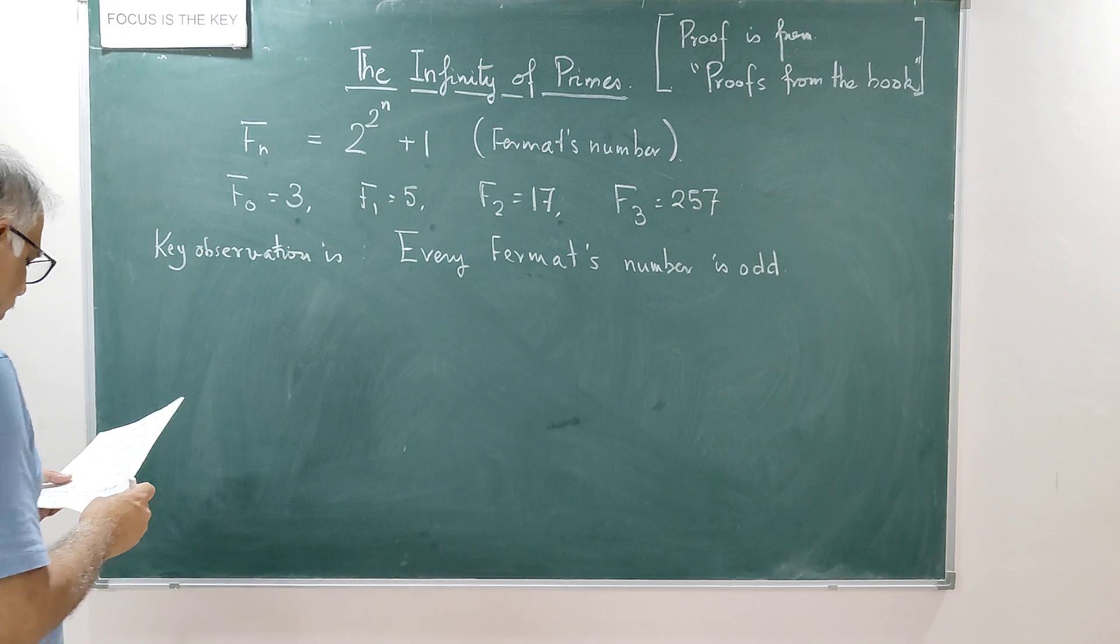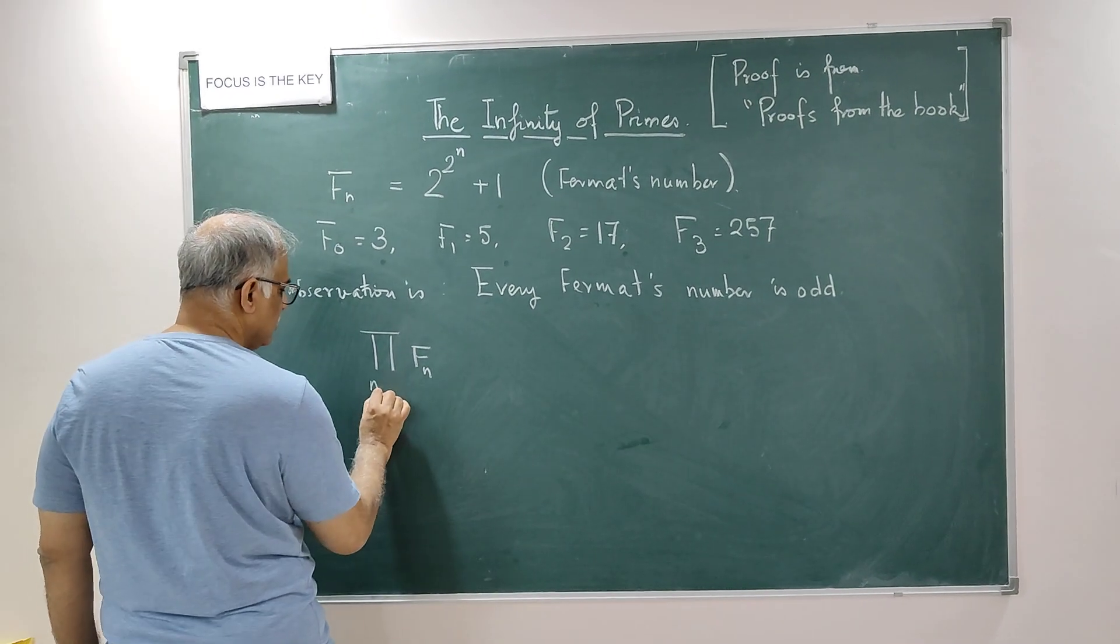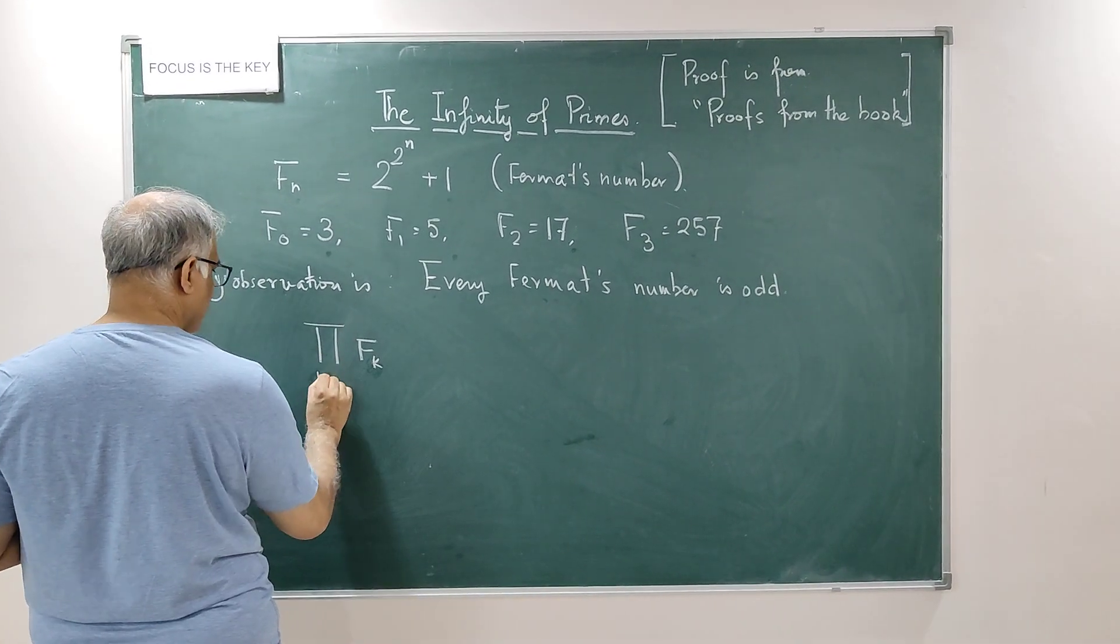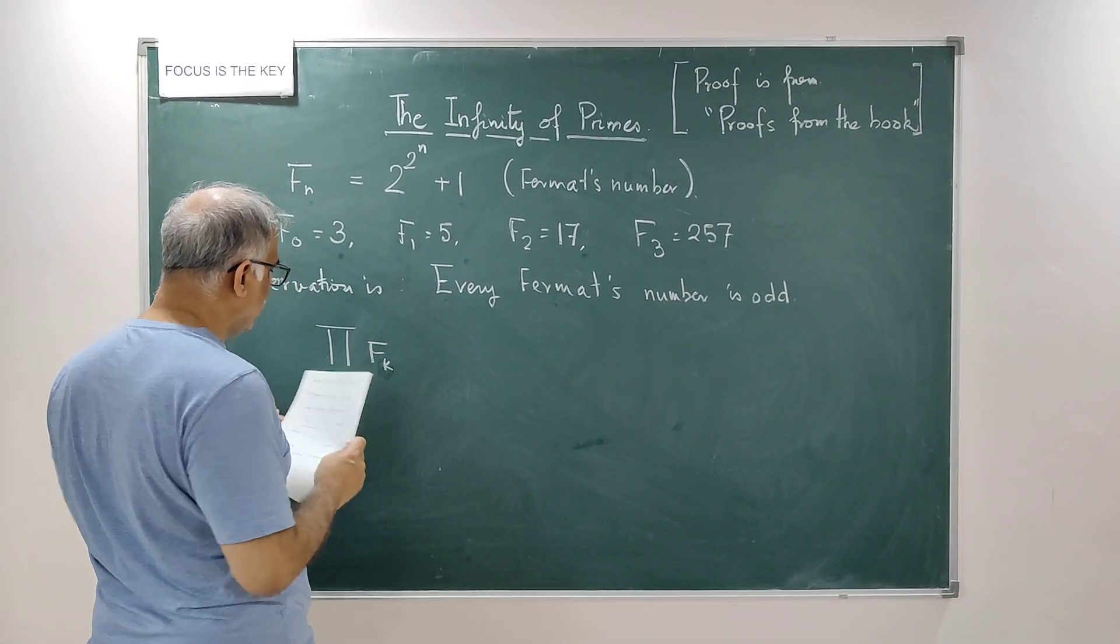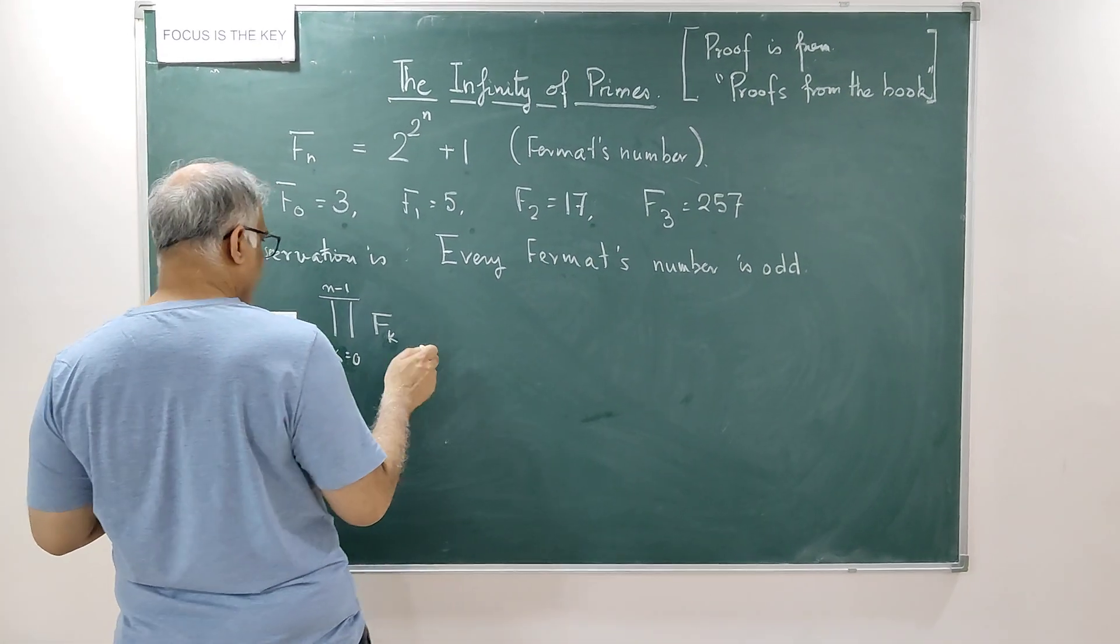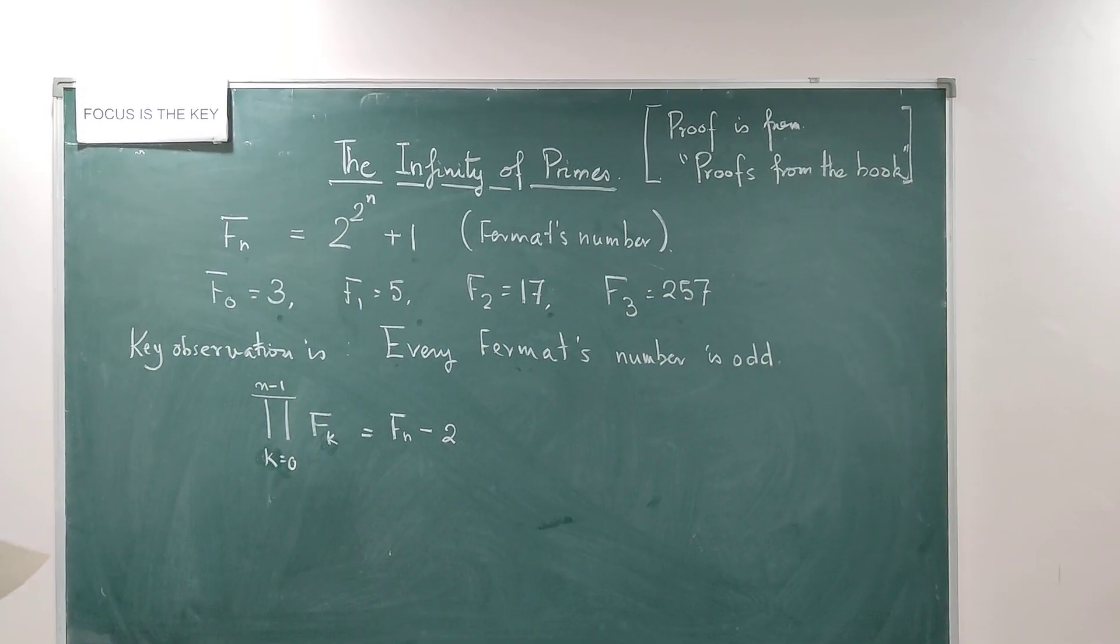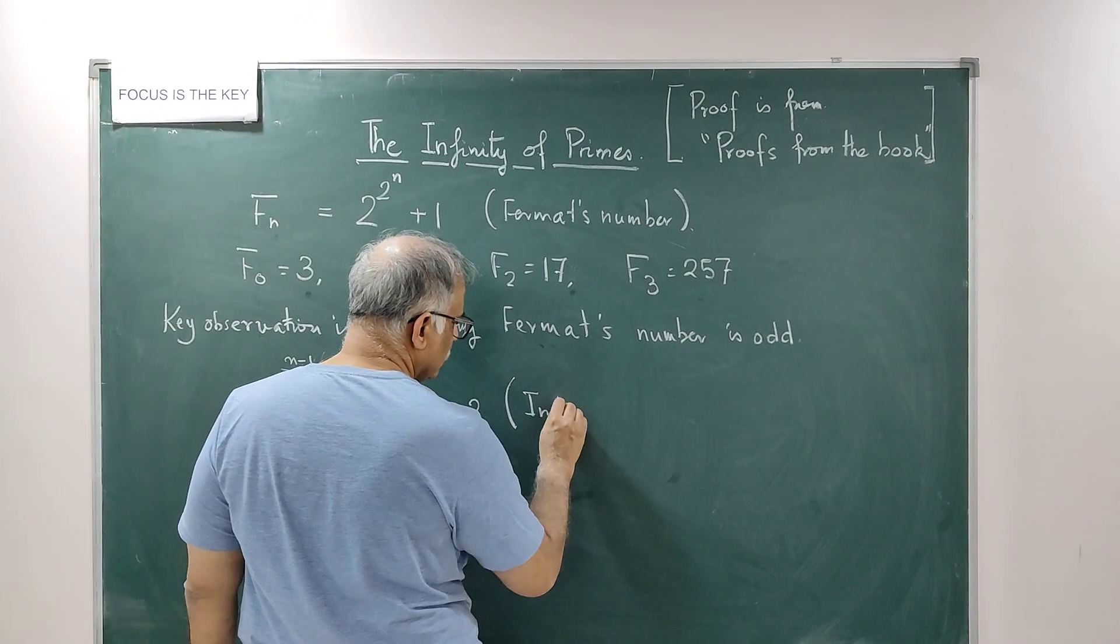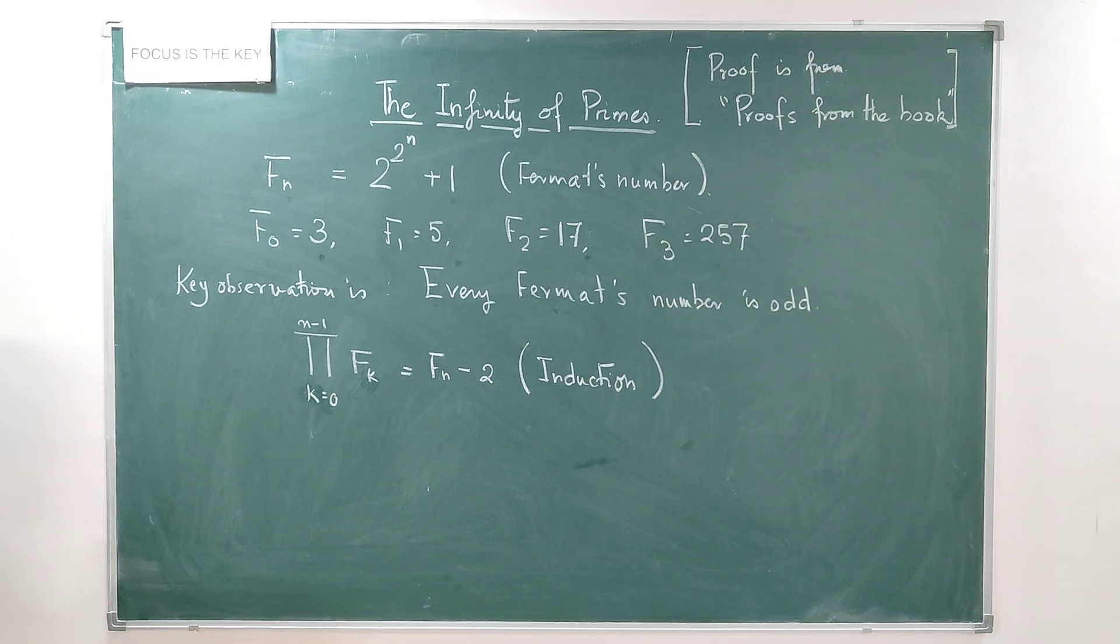All of the thing that one has to observe is that if I take the product of the first n Fermat's numbers, k equal to 0 to n minus 1, so it starts from 0 to n minus 1, the first n Fermat's numbers from F_0 to F_(n-1). If I do that, that will turn out to be F_n minus 2. This can be done through induction. I will not get into the proof of this, so here my whole goal is to just give a sketch. By induction you can prove this. You can try out the first few terms and then you can prove it by induction.